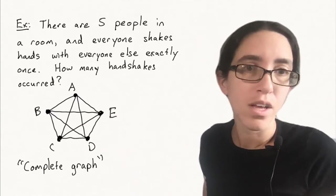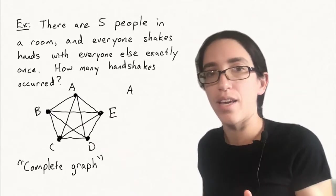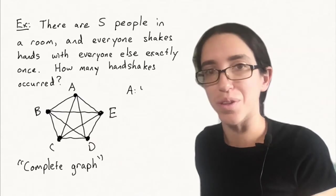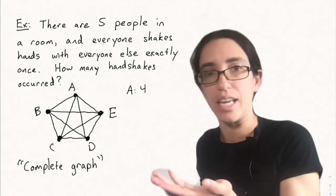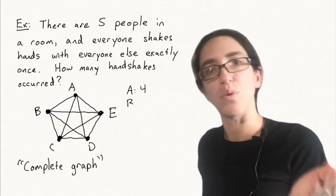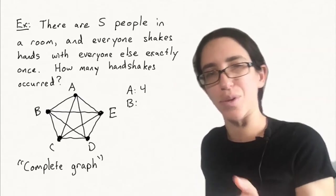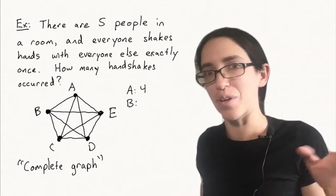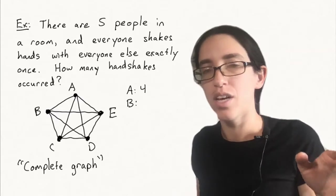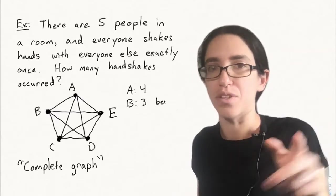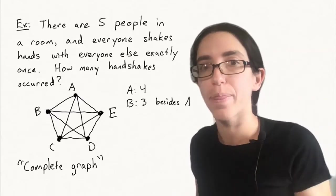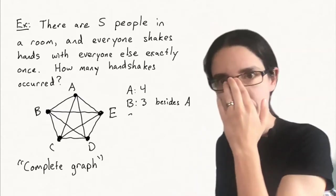So let's add them up. Let's start with how many people did A shake hands with? Four: B, C, D, and E. Once we've counted those, we want to count how many did B shake hands with that weren't already A. We don't want to count the segment between A and B twice. So we just say B shook hands with C, D, and E, which is three more. So three more handshakes besides A.